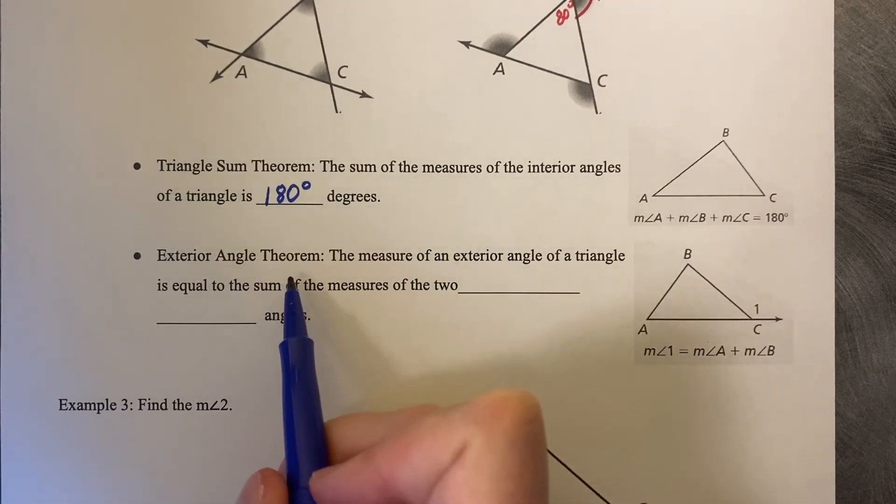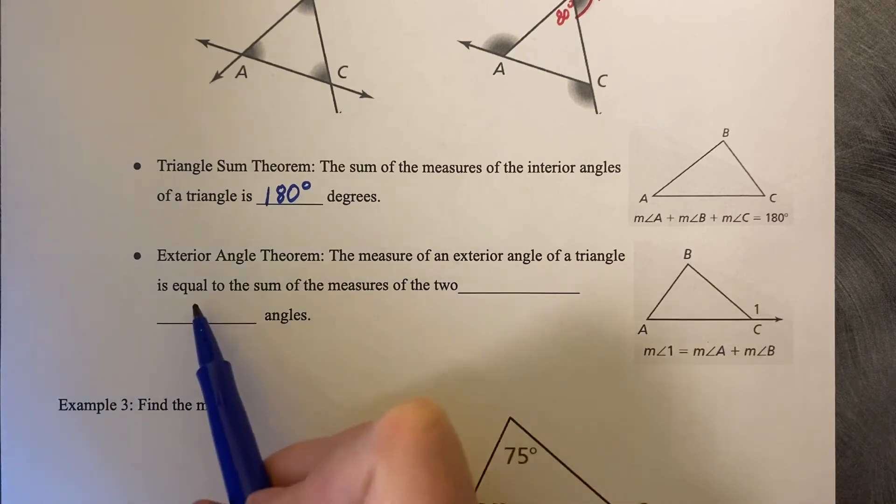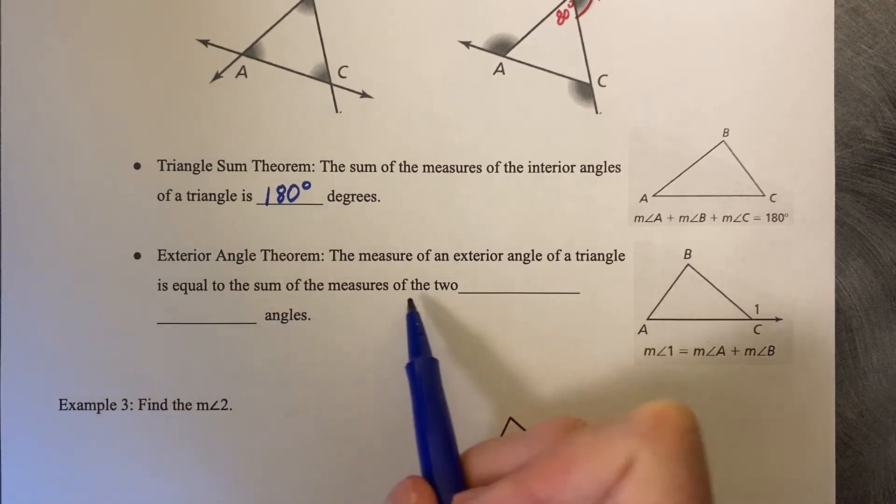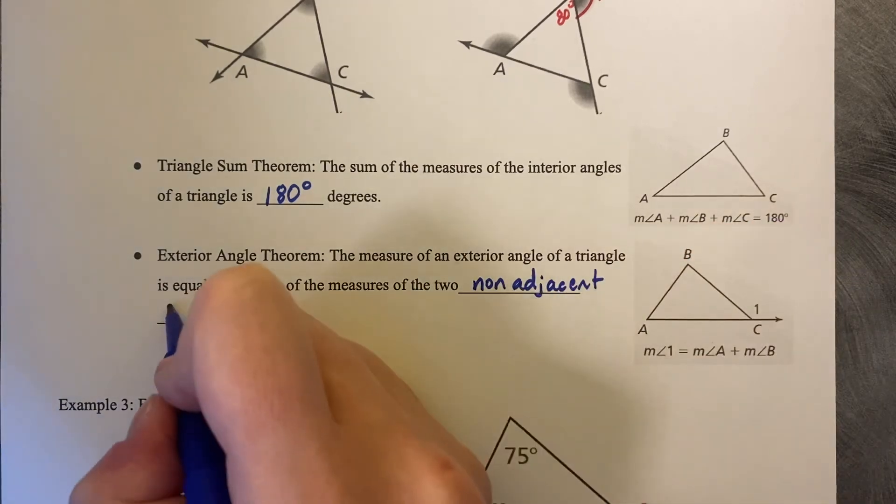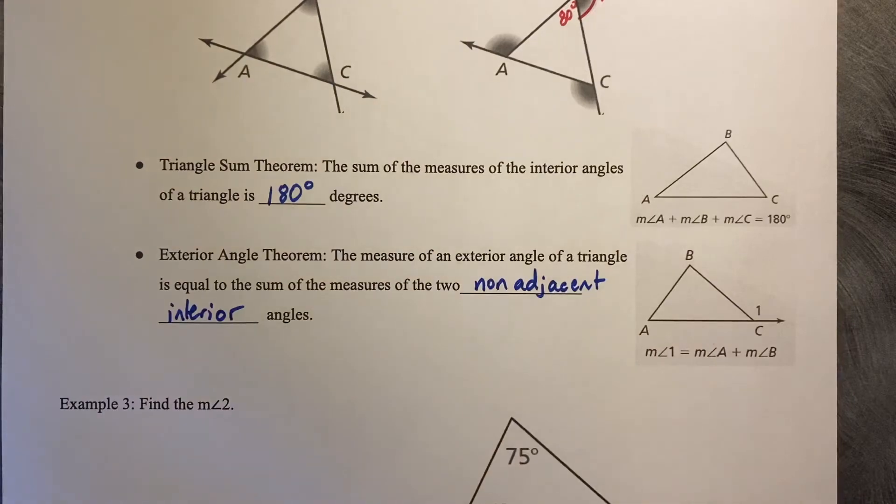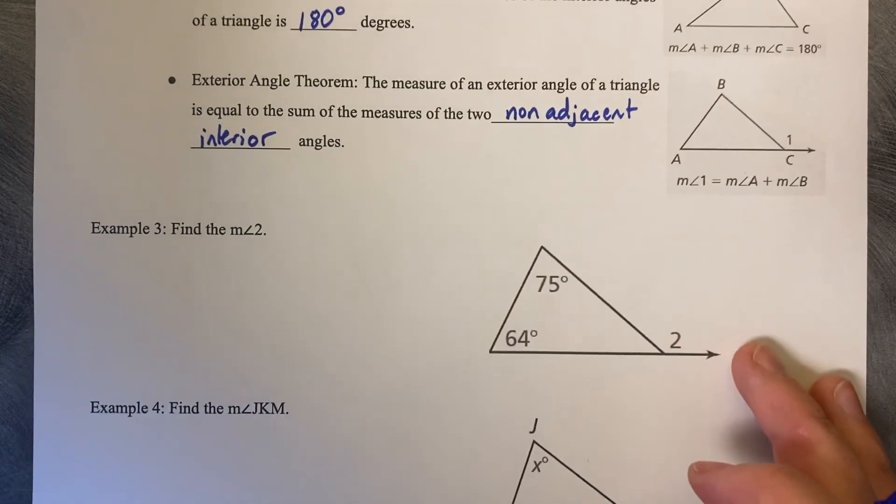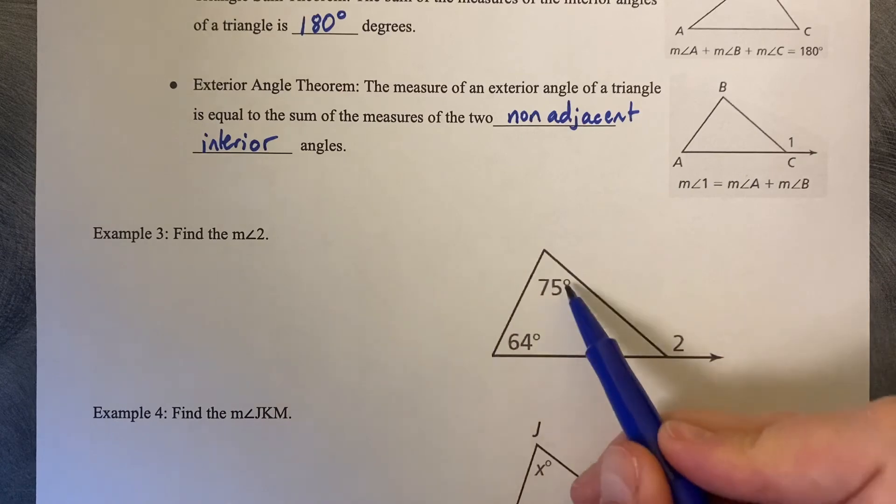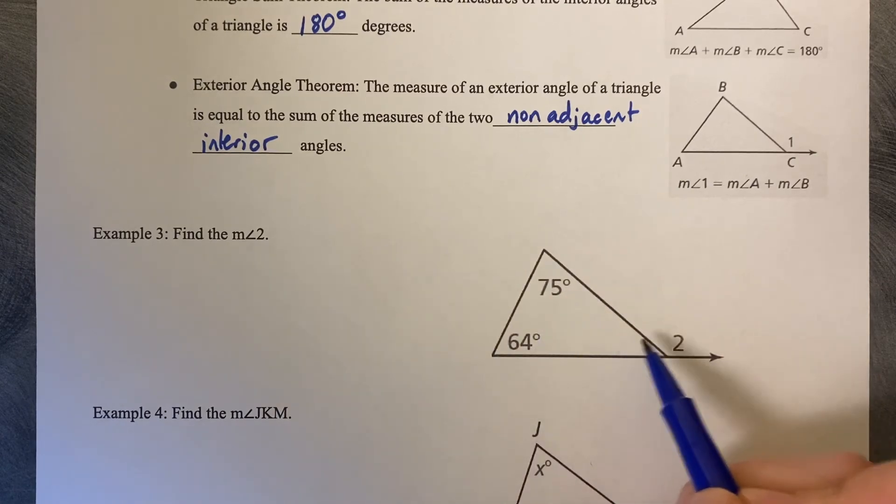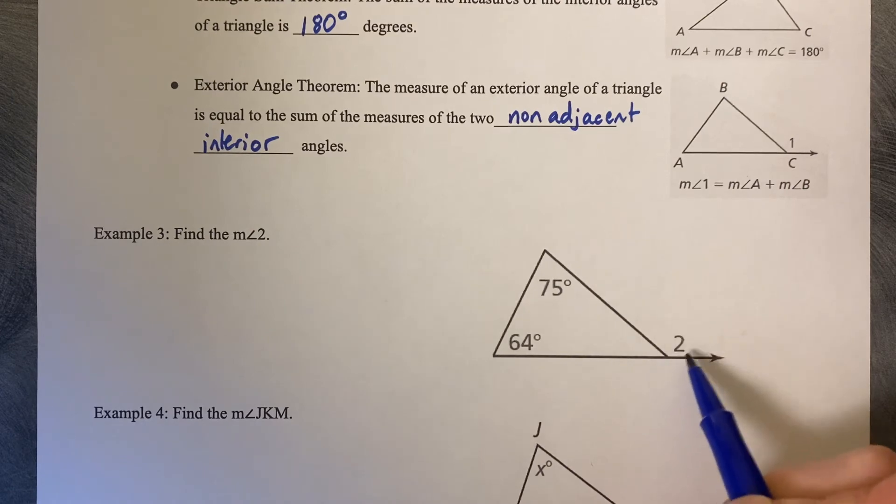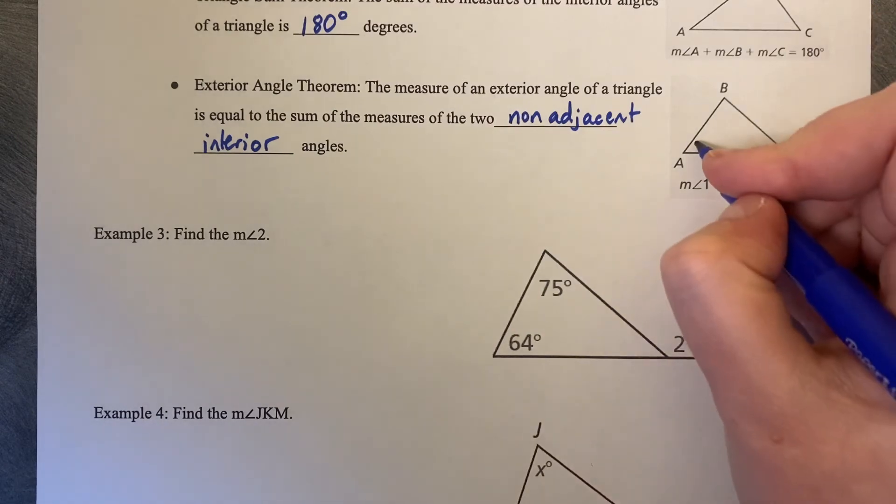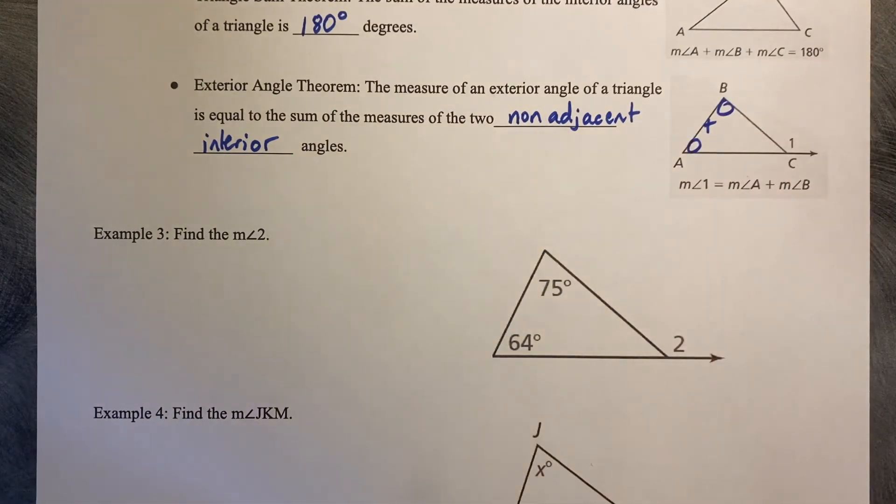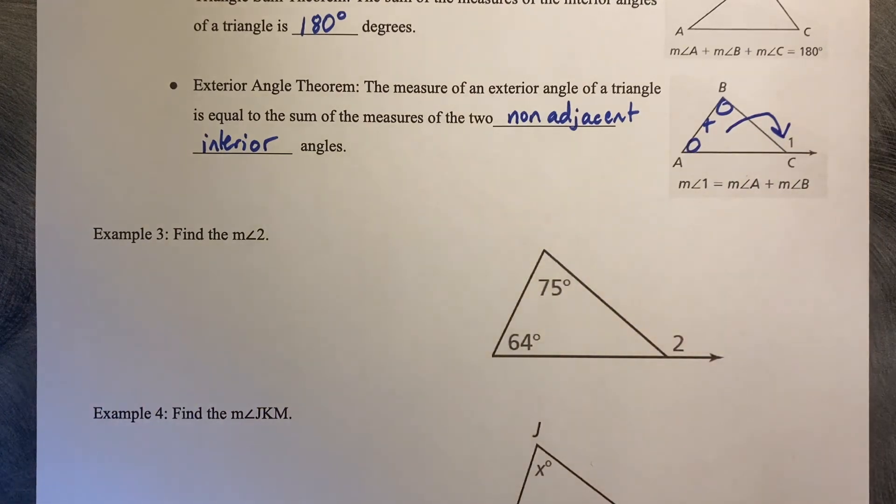Exterior angle theorem, this is a new one. So the measure of an exterior angle of a triangle is equal to the sum of the measures of the two non-adjacent interior angles. So I'm actually going to jump down to this example to kind of prove it to you. So in this triangle, I know two of them and I could discover this third one and then subtract it from 180 to get this exterior angle or we can use this new pattern. So if you take A plus B, it's going to result in this measure C that's on the outside.